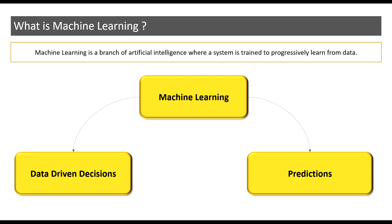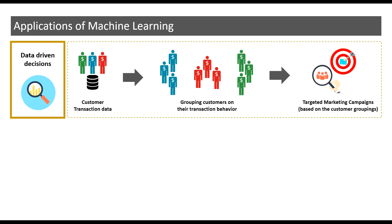Let me tell you about a few projects that I have worked on in the past that will shed more light on both data-driven decisions and predictions. For data-driven decisions, I worked on a project once where we had customers' transaction data. I grouped these customers based on similar transaction behavior. These groupings were presented to the client and the client used these groupings to perform targeted marketing campaigns. This is an example of literally how a business decision was derived from data.